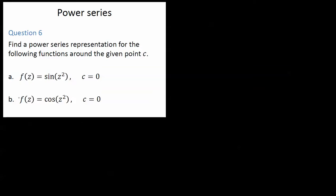Hey guys, now we want to look at question 6b. So we looked at 6a just a moment ago and our result was f(z) = sin(z²) equals the power series from n equals 0 to infinity, (-1)^n times z^(4n+2) over (2n+1) factorial.